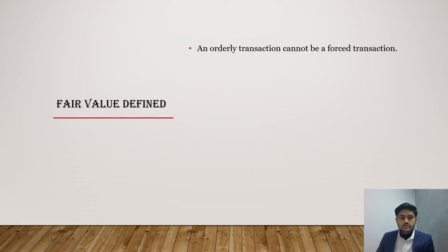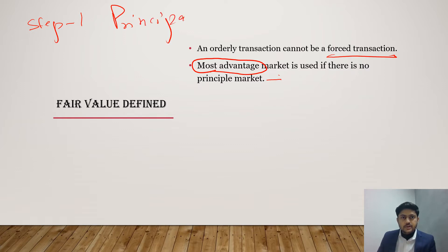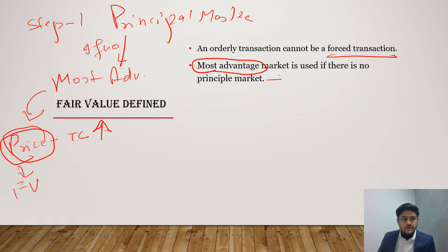An orderly transaction cannot be a forced transaction. The most advantageous market is only used if there is no principal market. The steps are: Step 1, search for the principal market. If no principal market exists, go to Step 2 and check for the most advantageous market, calculated as price minus transaction cost. Wherever this net value is highest, that price is considered the fair value.